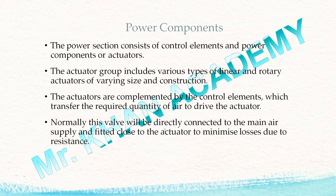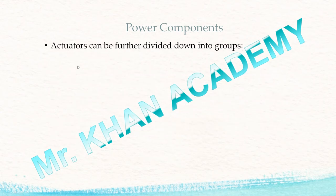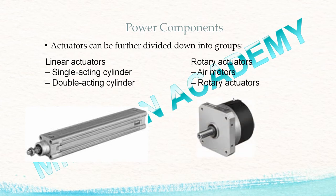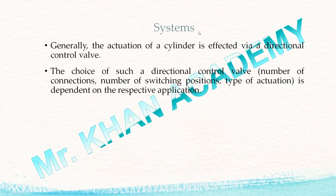Normally this valve will be directly connected to the main air supply and fitted close to the actuator to minimize losses due to resistance. The power component is divided into the following groups: linear actuators — that is single acting cylinder or double acting cylinder — and rotary actuators — that is air motor and rotary actuator. If you want linear motion, we use the linear actuator; if you want rotary motion, we use the air motor and rotary actuators.